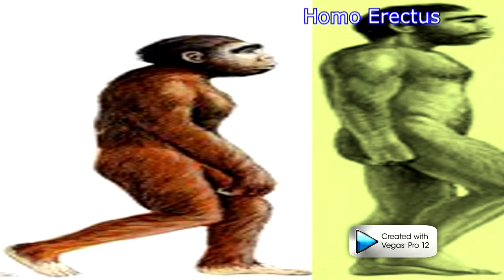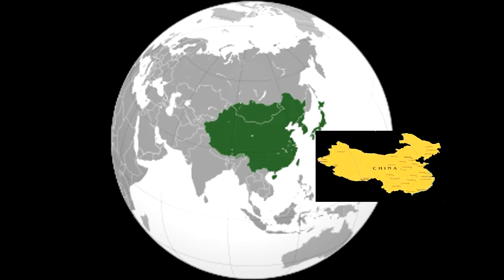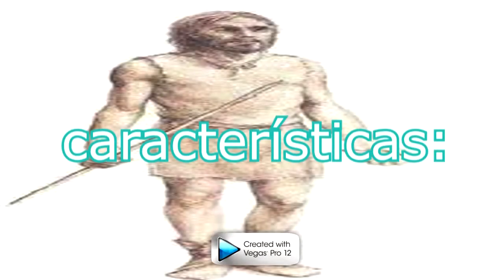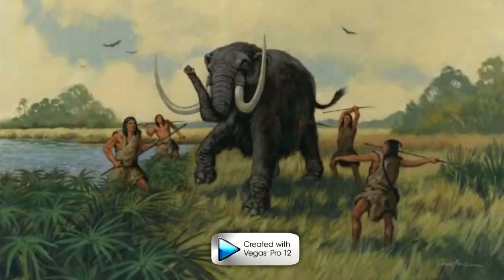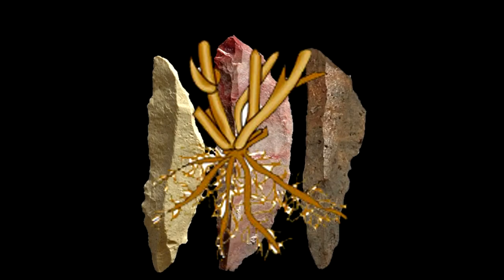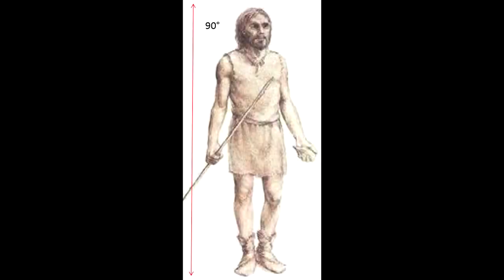Su sucesor fue el Homo erectus, que vivió hace aproximadamente 1.800 millones de años y se encontraba en Asia oriental, ocupando los países de China e Indonesia. El Homo erectus se caracterizó por saber utilizar y dominar el fuego. Comenzaron a cazar con herramientas muy rudimentarias hechas de rocas talladas amarradas con raíces, conocidas como chopper. Fue el primer humano en pararse erguido, y de ahí su nombre de erectus.